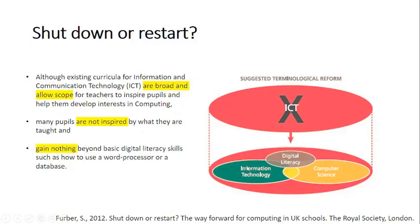So they came up with a formula to scrap the terminology of ICT and move towards a three-area approach — a bit like science has biology and chemistry, or English has English lit and English language. So we're moving towards digital literacy, information technology, and computer science to split computing into distinct areas of interest.